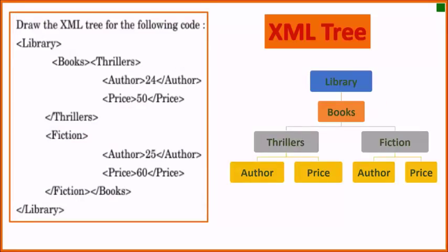Next question is for drawing the XML tree. Here, 'Library' is the root element. Under 'Library', there is one element 'Books'. Under 'Books', there are two nested elements, 'Thrillers' and 'Fiction'.